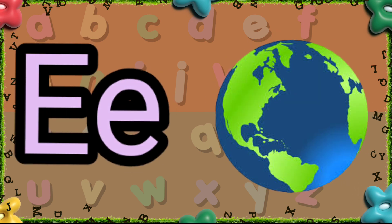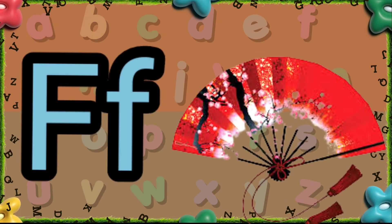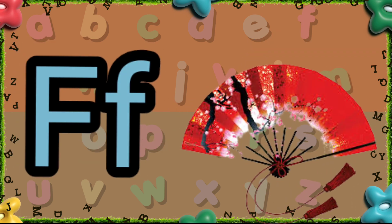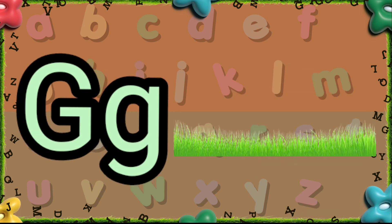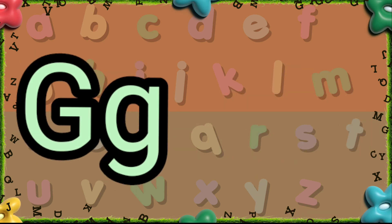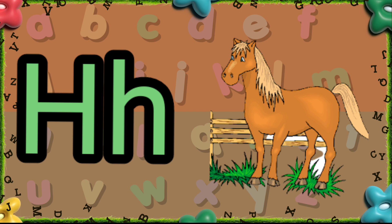E is for Earth. F is for Fan. G is for Grass. H is for Horse.